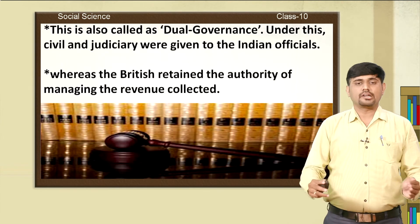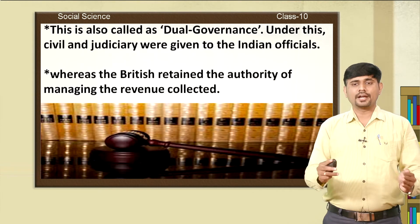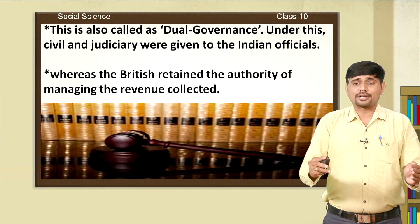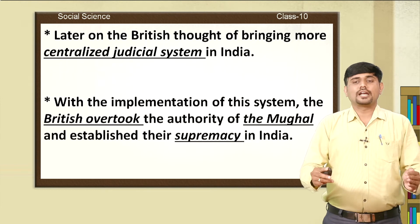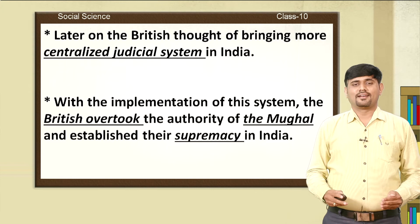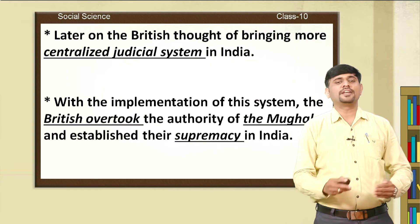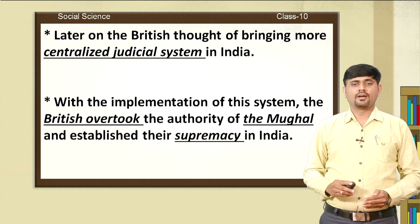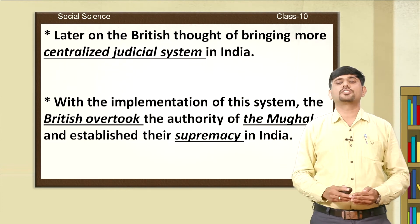The dual government — also called dual governance — had two governments: one headed by the Indians, who were supposed to look after civil and judiciary issues, while the British retained the authority of managing the revenue collected in the provinces. That is how the dual governance came into existence in India. Later on, the British thought of bringing a more centralised judicial system to India. Step by step, the British started to improve the judicial system, taking over the authority of the Mughal rulers and establishing their supremacy in India.